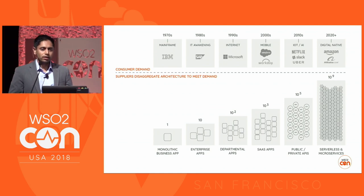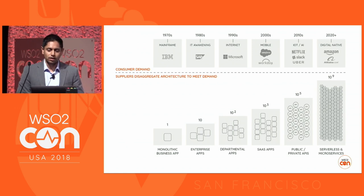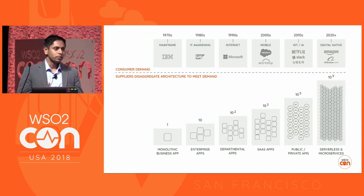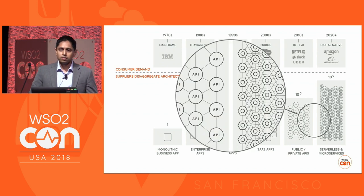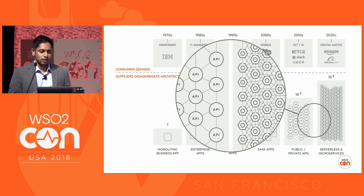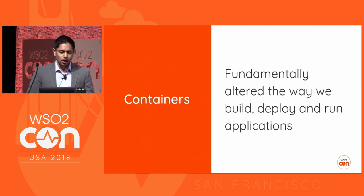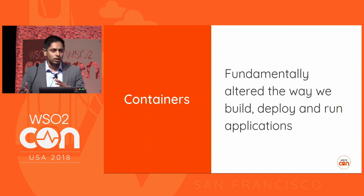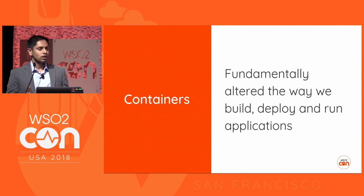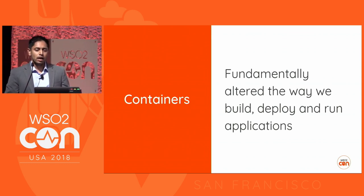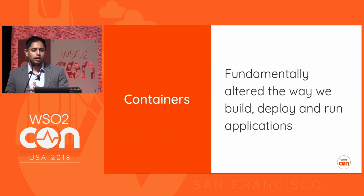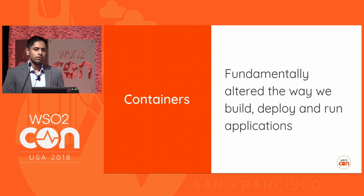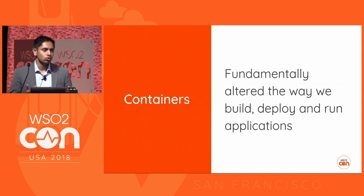So you've been hearing this all week. The architectures are disaggregating to help companies scale and work at the internet scale. And one of the ways that we can do that easily is by using containers. Containers have fundamentally changed and altered how we build applications. And we look at what are the characteristics that make container-native, and how those have affected how we build new applications.